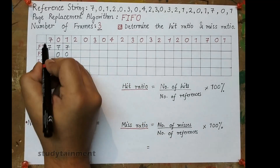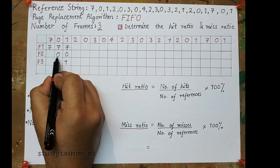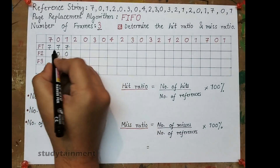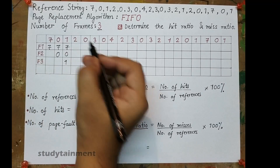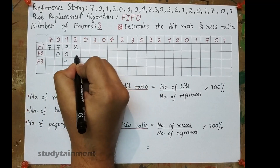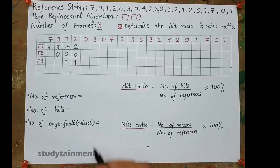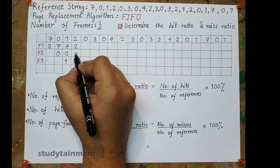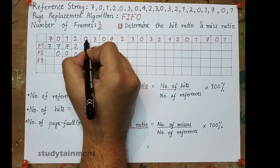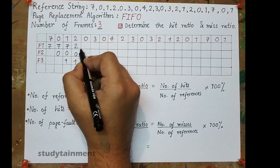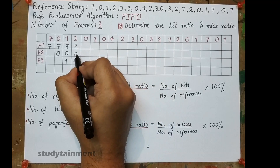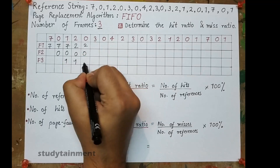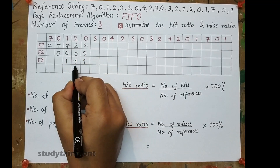Here, 7 is the oldest page — it occurred 3 steps ago, 0 for 2, and 1 for only 1. So 7 will be replaced with 2 — this is a page fault. Next, 0 is already present and 0 came again, so this phenomenon is known as a hit. It remains as it is.